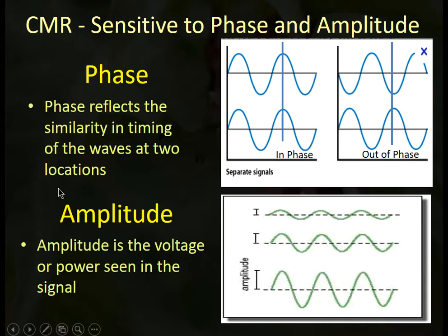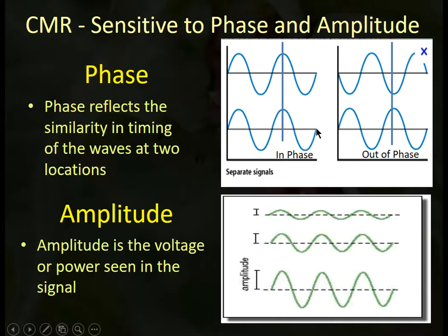Common mode rejection is sensitive primarily to phase — meaning whether the waves are waving at the same time, which would mean they are in phase, or waving at opposite times or some other non-synchronous relationship, which would be out of phase. When two waves are in phase, they are more likely to be rejected because they look very similar to the amplifier. If they're out of phase, they look very different to the amplifier, and both waves are retained rather than rejected.